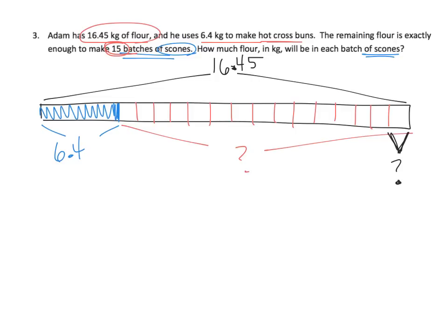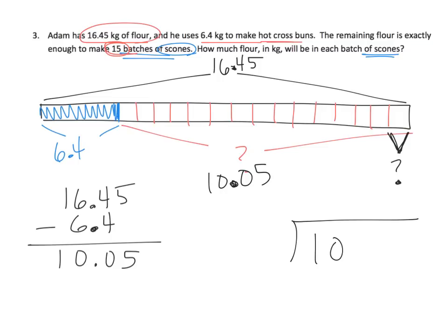Okay, so what's our steps? Well, first we're going to take 16.45 and we're going to subtract 6.4. So we're lining up the decimal. And I could do this part real quick. So this huge section right here is equal to 10.05. And then because we want to know how much is one of those 15 sections, this is going to be the division problem that we do. And I'm going to leave that up to you parents and teachers to help your students with that one.